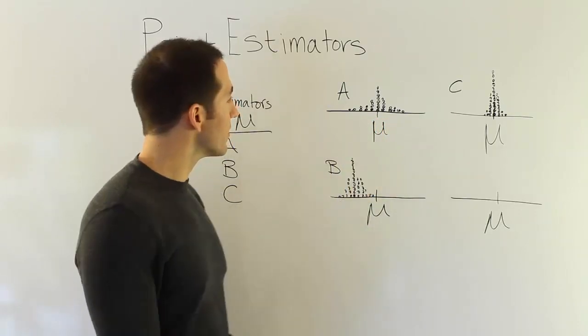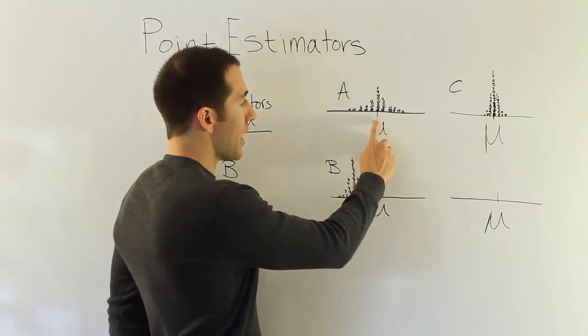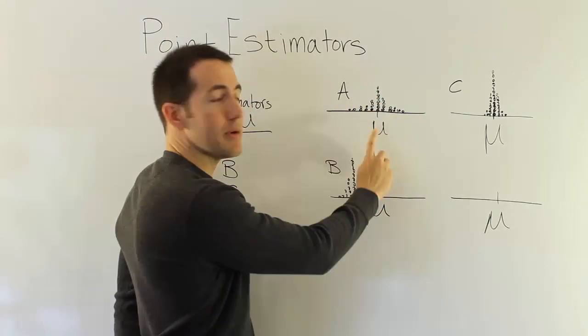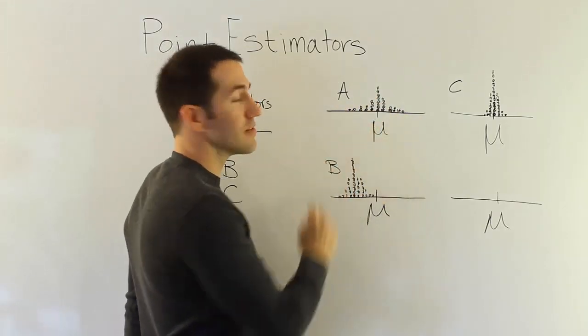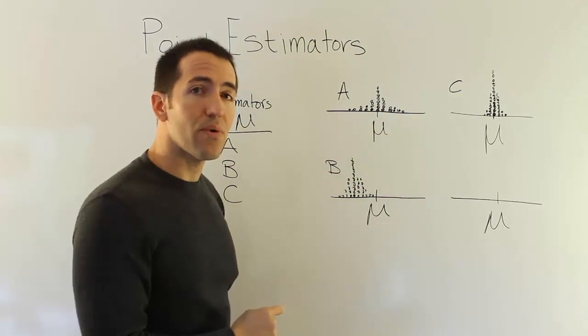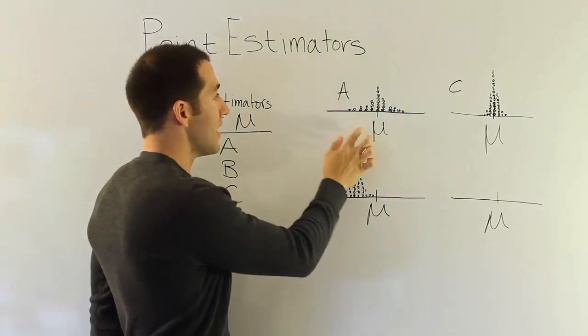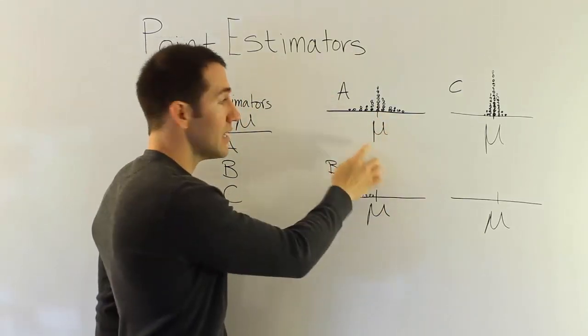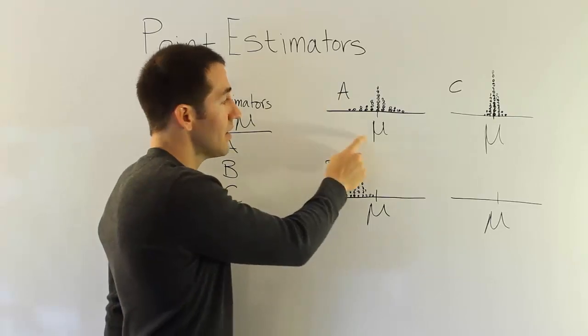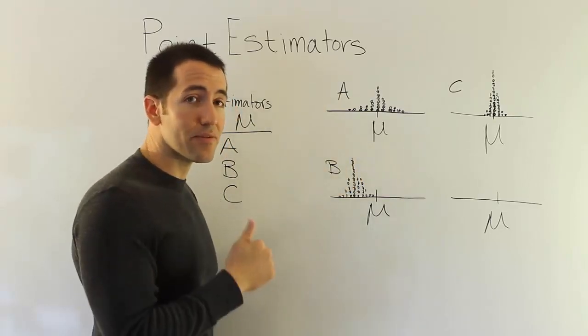In other words, if I had to stick my finger somewhere on the curve so that I could balance this shape, if it was a three-dimensional object, I'd probably put my finger right there, which is where the mean is located. That's a really great quality. That means the average value for A seems to be the population mean. In other words, the average value of A is our target parameter. That's a really good trait.